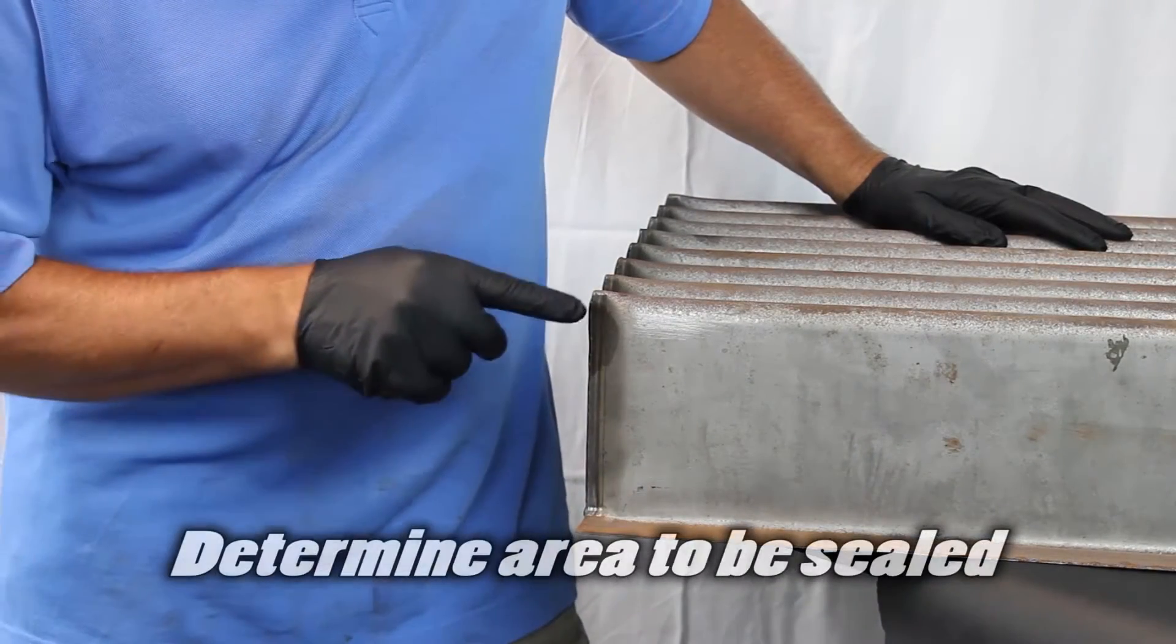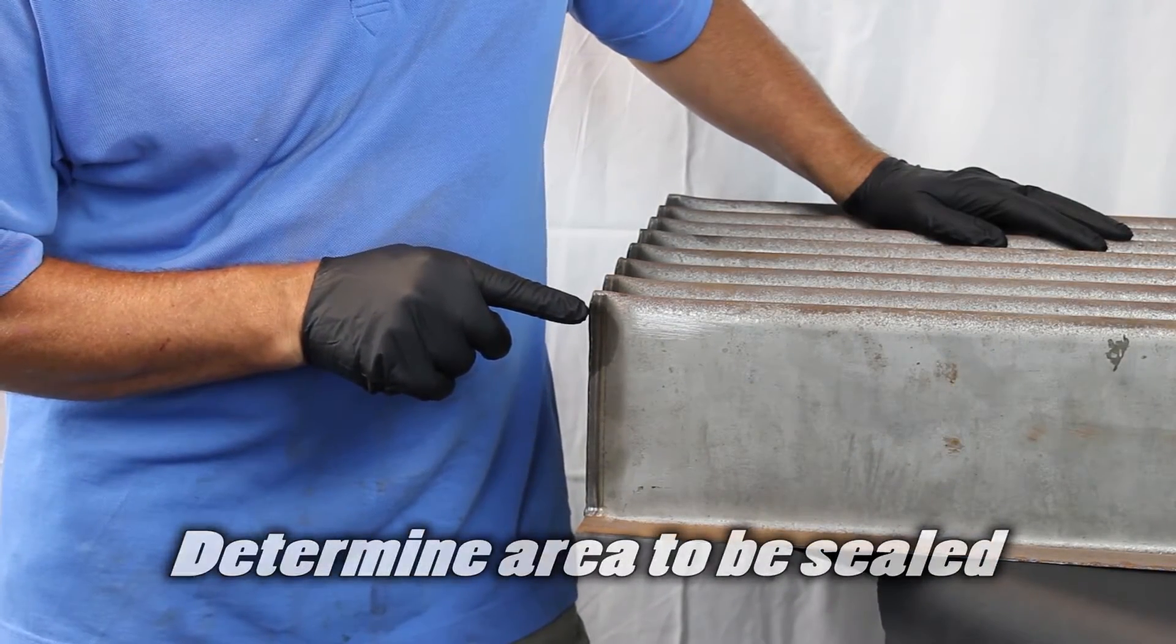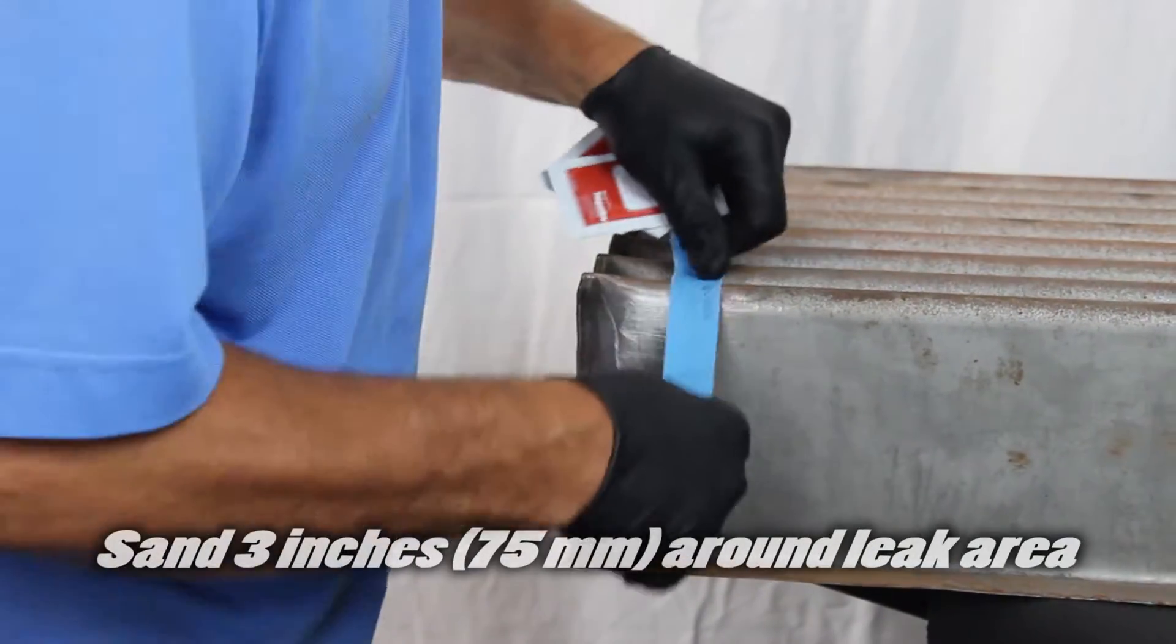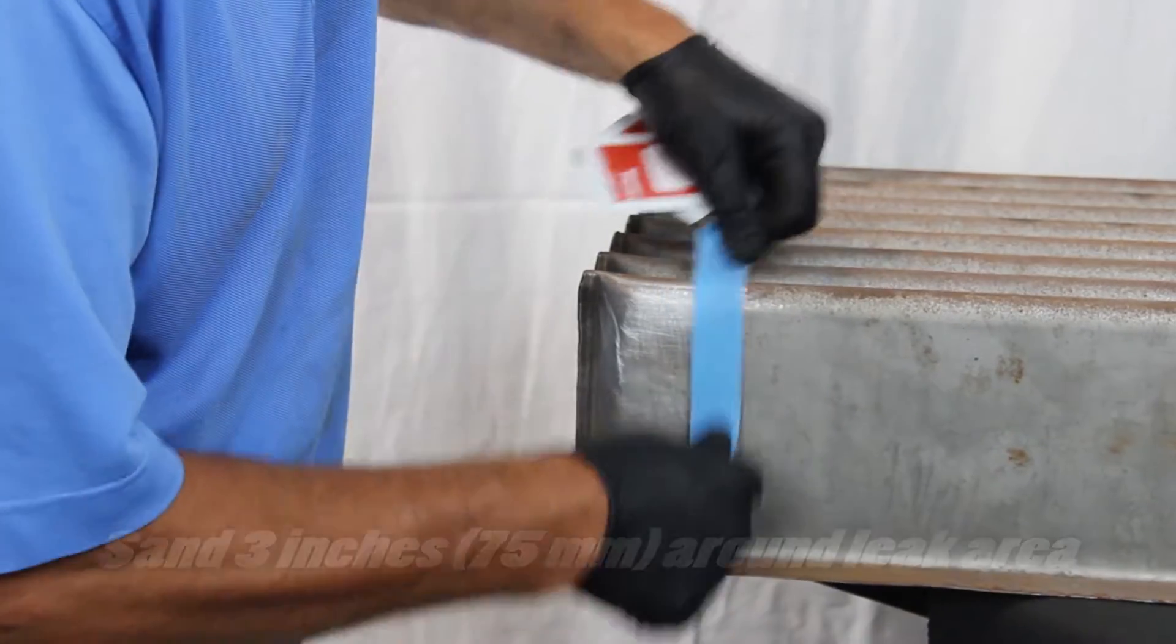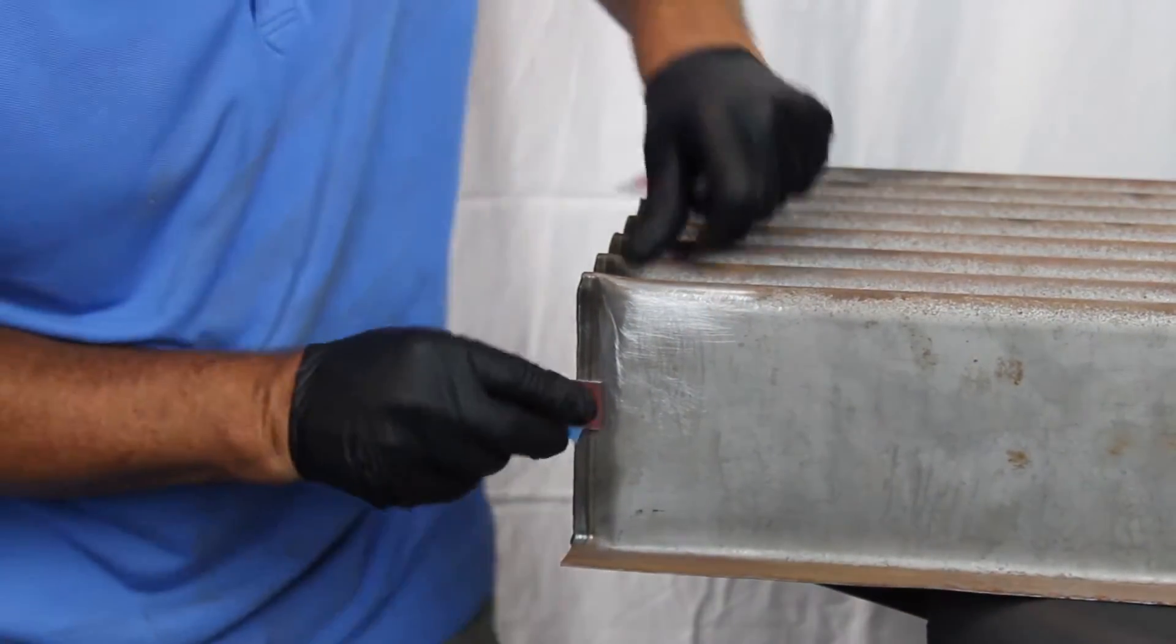First, find the leak or area to be repaired. Then sand or grind 3 inches around the leak area to remove all loose particles, oxides, and paint.